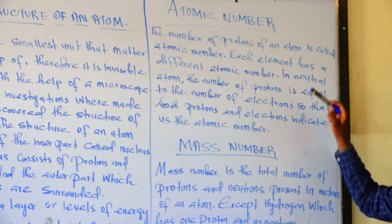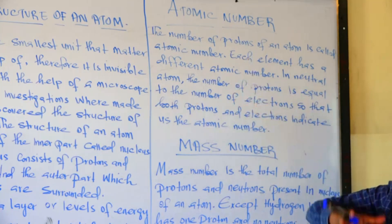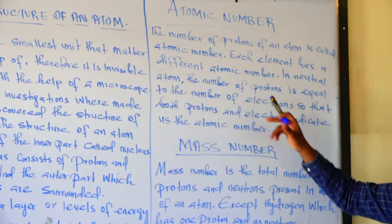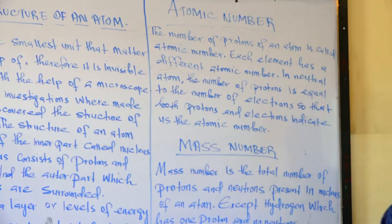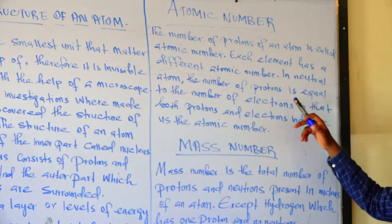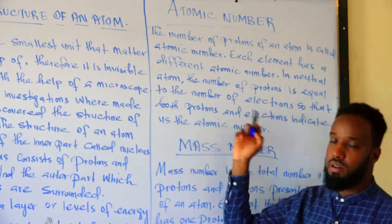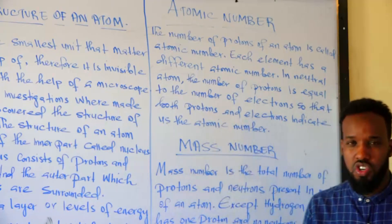In a neutral atom, the number of protons is equal to the number of electrons. This means both indicate the atomic number.